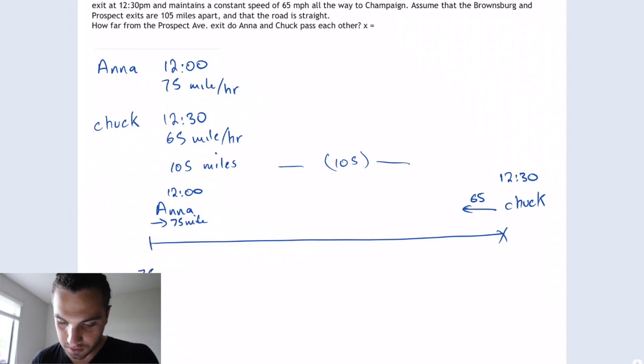So 75 times 0.5, that's the time, and that will give us 37.5 miles. Okay. So this is the distance where it's going to start from. Let's draw it again. So 37.5.